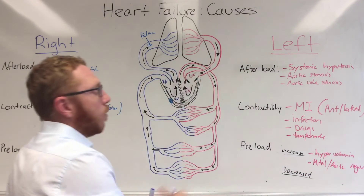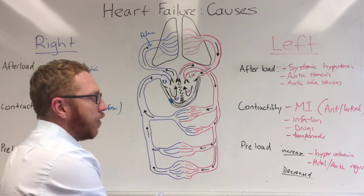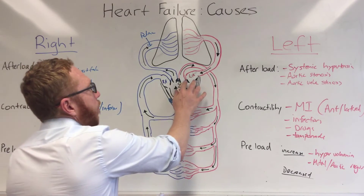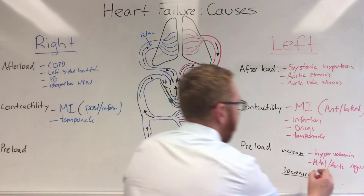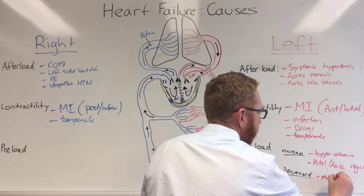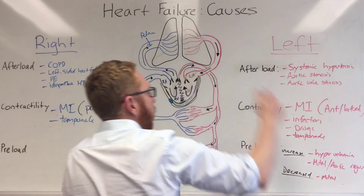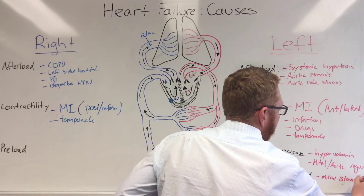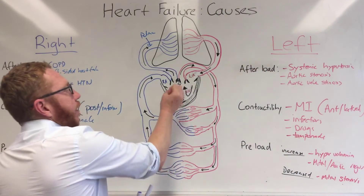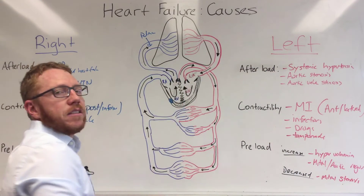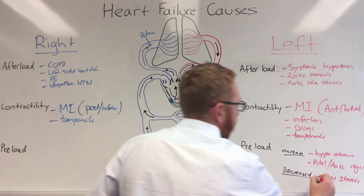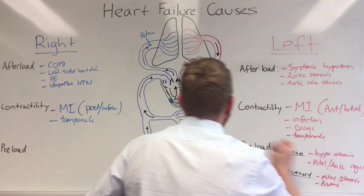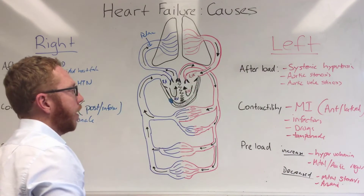For decreased preload on the left side — not enough fluid coming in — we could have mitral stenosis, where the mitral valve is stenotic and restricts filling. Or if the heart is working very hard, such as in long-standing anemia, there may not be enough volume returning to the ventricle.